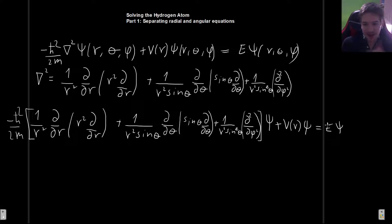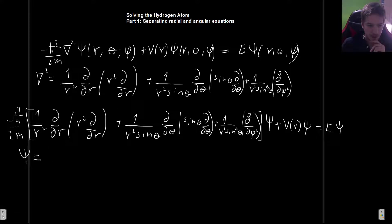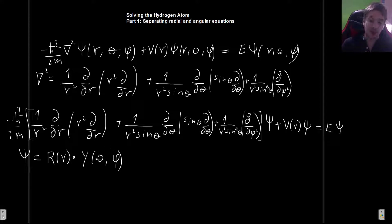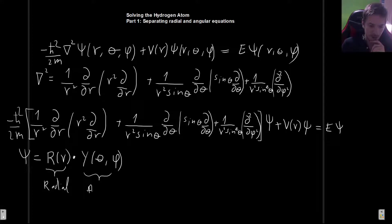Now comes the crucial step: we separate the variables. We look for solutions of the form ψ = R(r) · Y(θ, φ), where R is a function of the radius only and Y is a function of the angles. Later we will do separation of variables again inside Y to separate θ and φ. This R part will give us the radial equation, and Y will give us the angular equation, which I'll cover in separate videos.